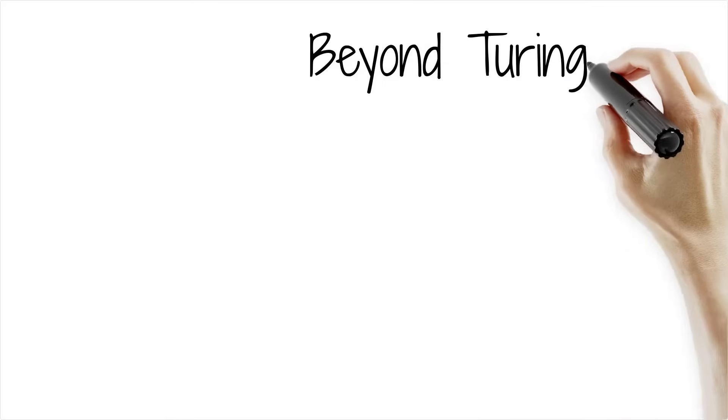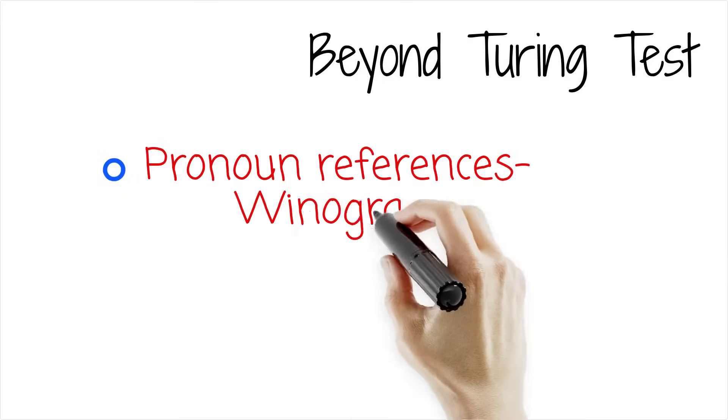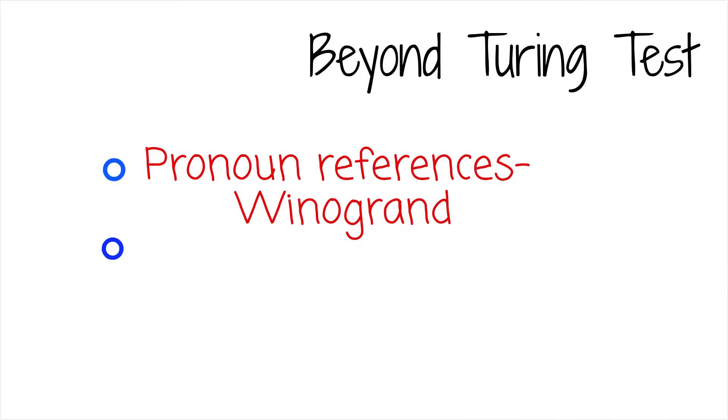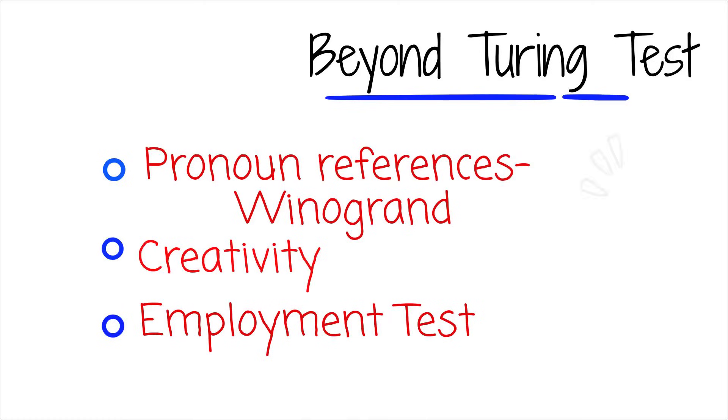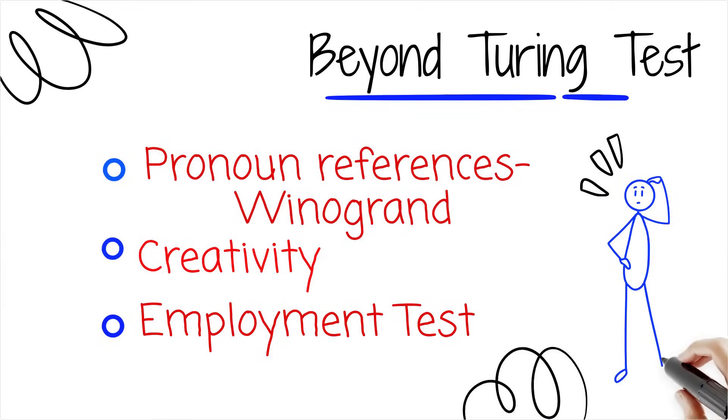Beyond the Turing test, we've got better ways to measure AI's true capabilities. Can it handle tricky pronoun references, the Winograd test? Can it craft something genuinely creative, Lovelace 2.0? Can it hold down a job without co-workers noticing, the employment test? And if it can brew a latte unassisted, you know we're in trouble. It's a busy future out there, folks.